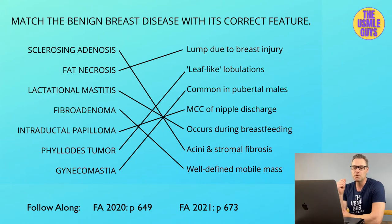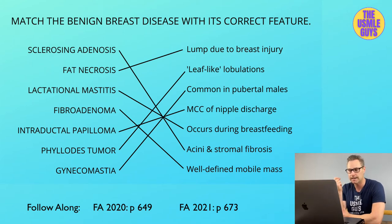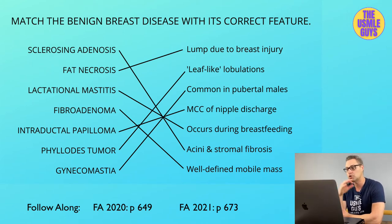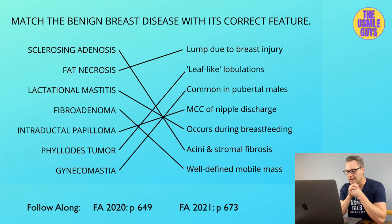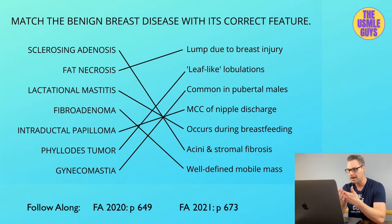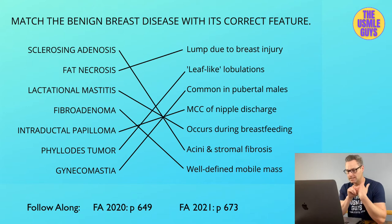Next up, we have the inflammatory processes, which include fat necrosis and lactational mastitis. Fat necrosis is super high yield and commonly tested. It is a benign lesion that occurs as a result of trauma to the breast. On mammography, this will look like a calcified oil cyst, and on biopsy you'll see necrotic fat in giant cells.